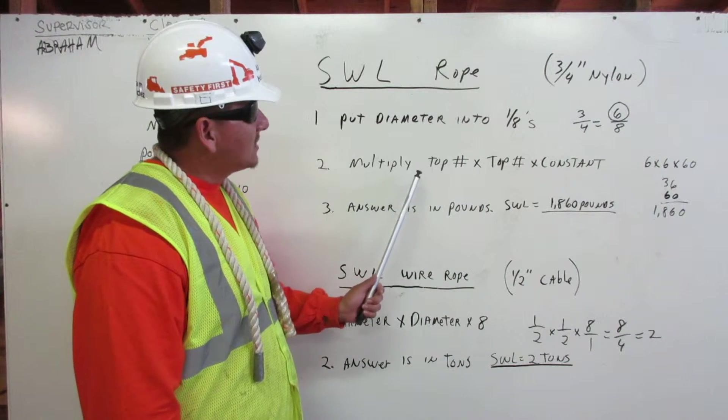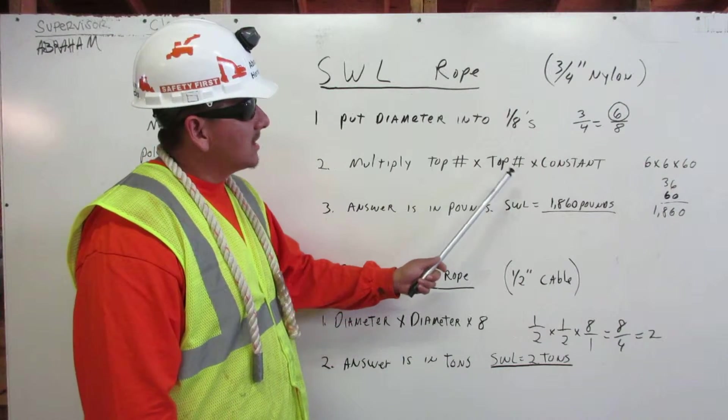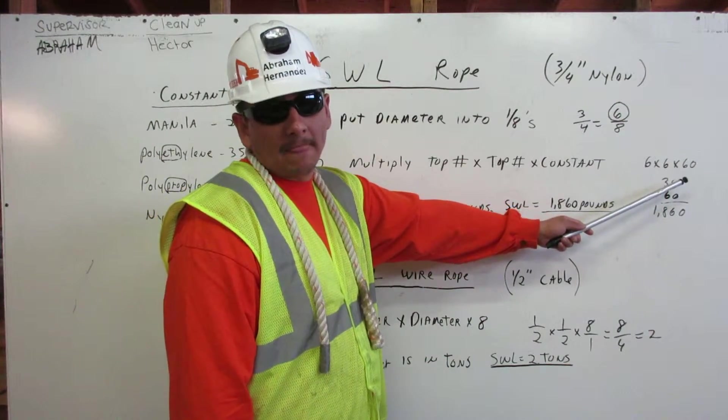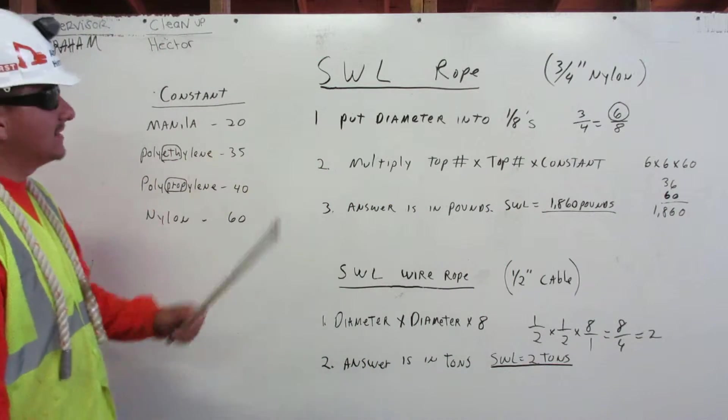Number two, multiply top number times top number times constant. In this case it'll be six times six times sixty. Now let me explain how we got this sixty.